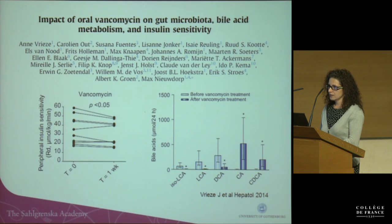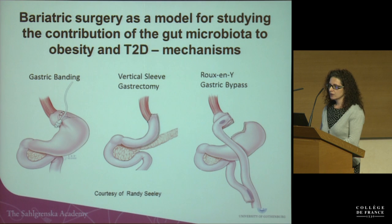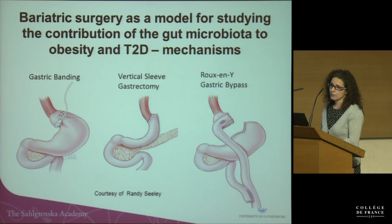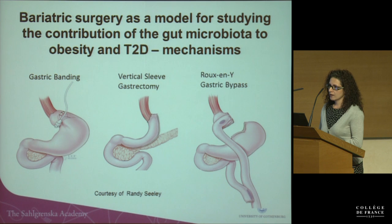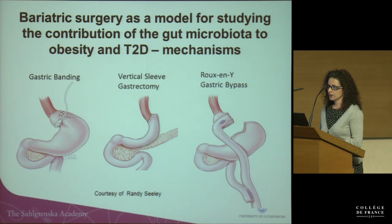This correlated with an increase in FGF-19 and FXR signaling. To better understand the interaction between gut microbiota, obesity, and type 2 diabetes, we used bariatric surgery as a model. We have samples from subjects who underwent different bariatric surgical procedures. In the first study, we compared subjects who received gastric banding or Roux-en-Y gastric bypass. We will also present data on vertical sleeve gastrectomy.